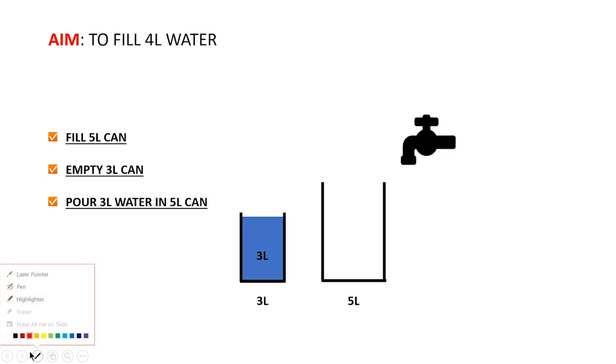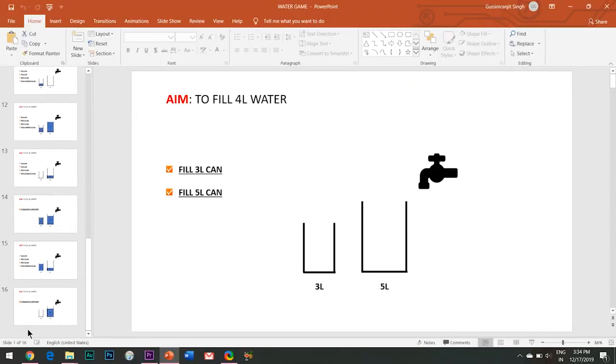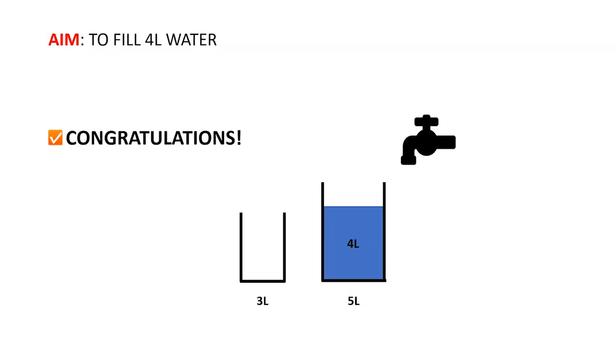There I get another three options: to either fill the five liter can, empty the three liter can, or pour three liter water in the five liter can. This process will continue unless and until I reach my final aim to fill four liters of water in this five liter can.